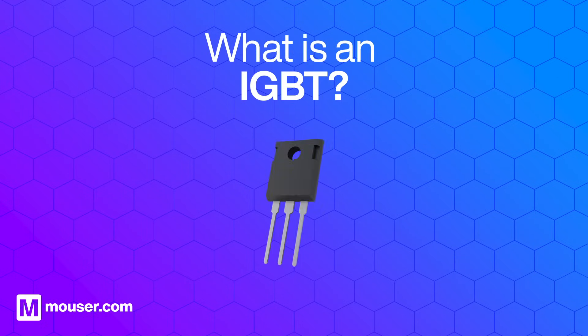An IGBT, or Insulated Gate Bipolar Transistor, is a semiconductor device that acts as an electronic switch, controlling the flow of electrical current in various applications.